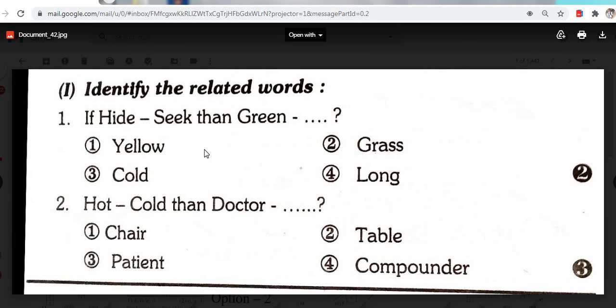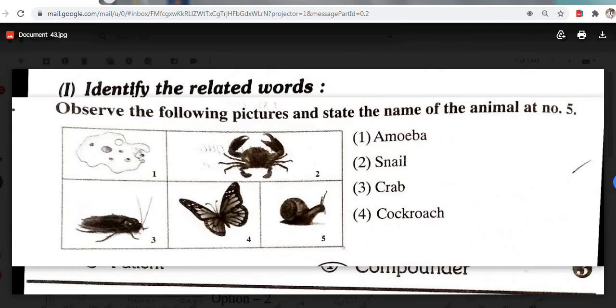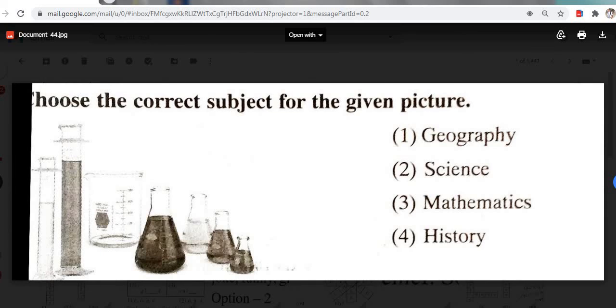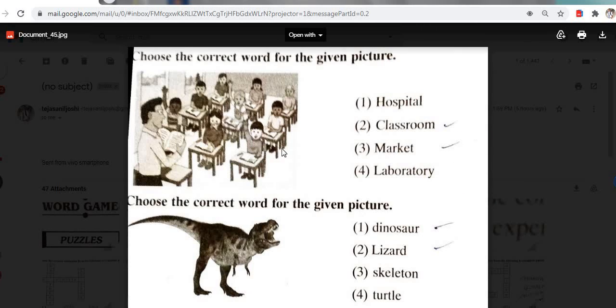Choose the correct subject for the given picture. Science. It is science. Because scientific apparatus are there. Mathematics cannot come. History cannot come. History can never come. Choose the correct word for the given picture. Classroom. It is a classroom. Choose the correct word for the given picture. Dinosaur. All of you know dinosaur.